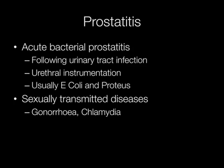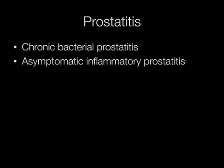There are many different types of prostatitis. Acute bacterial prostatitis may follow a urinary tract infection. It can also follow urethral instrumentation, and the organisms are usually E. coli and Proteus. Prostatitis can also follow sexually transmitted diseases such as gonorrhea and chlamydia. Prostatitis may be chronic and sometimes completely asymptomatic, only known about when it is seen in histological specimens.